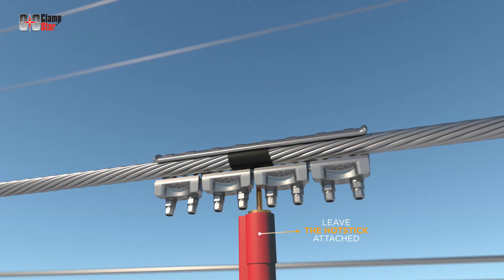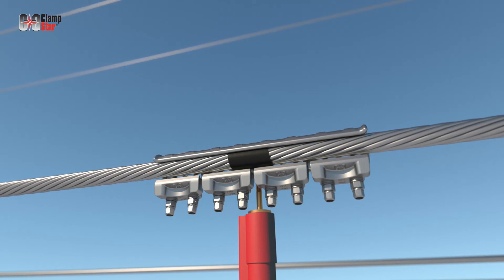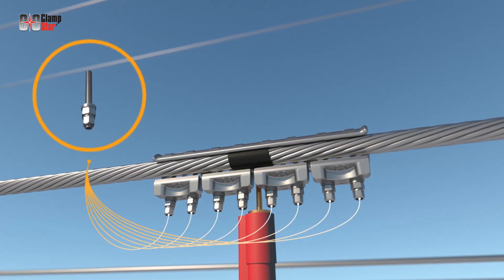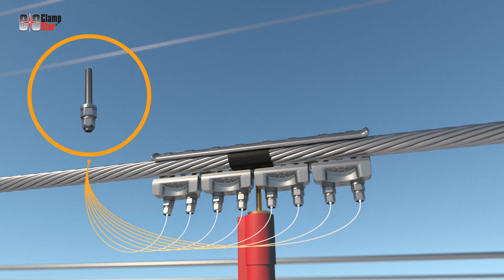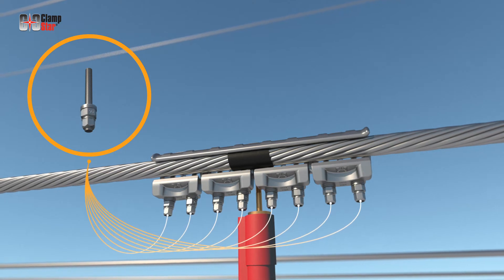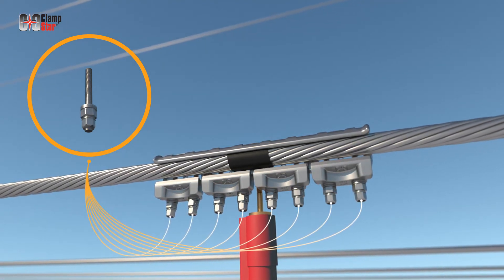Distribution class ClampStar units are supplied with unique nuts designed to shear at the appropriate torque level. The torque limiting nut negates the need for a torque wrench, assures that proper fastener torque is achieved, and also provides inspectors a means to verify proper installation.